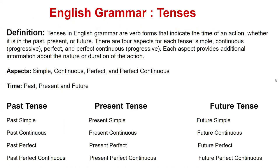Definition: Tenses in English grammar are verb forms that indicate the time of an action, whether it is in the past, present or future. There are four aspects for each tense: simple, continuous, perfect, and perfect continuous. Each aspect provides additional information about the nature or duration of the action.